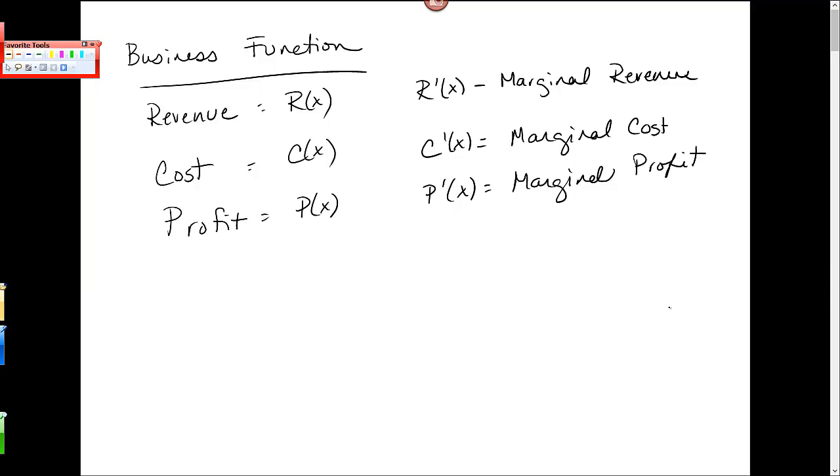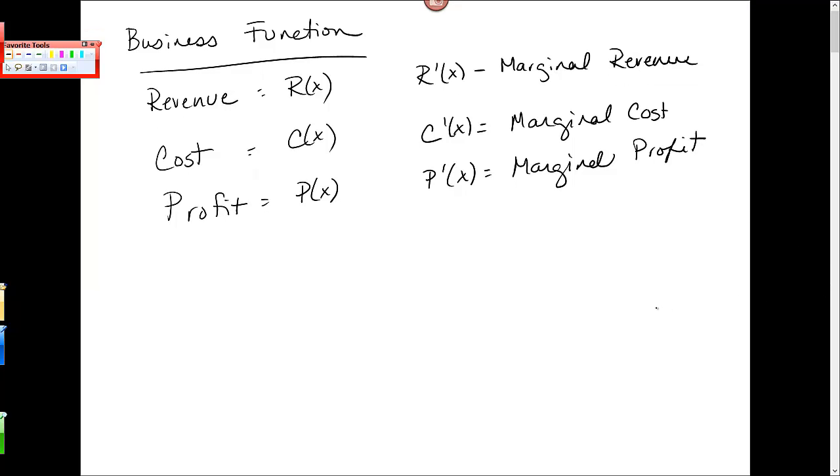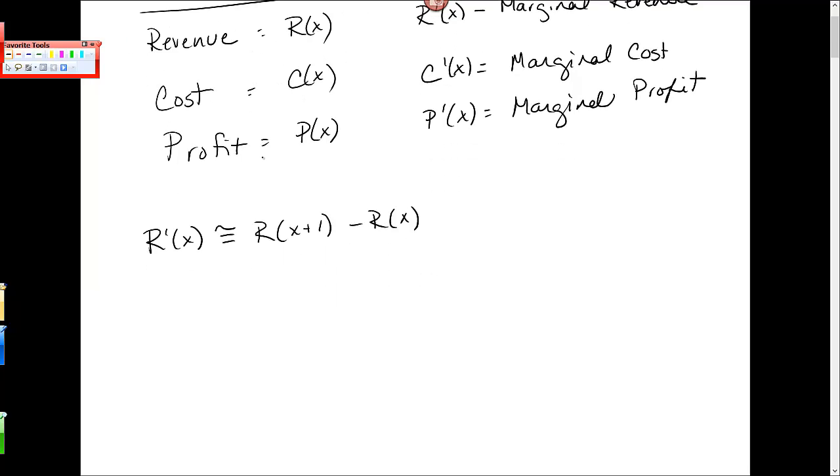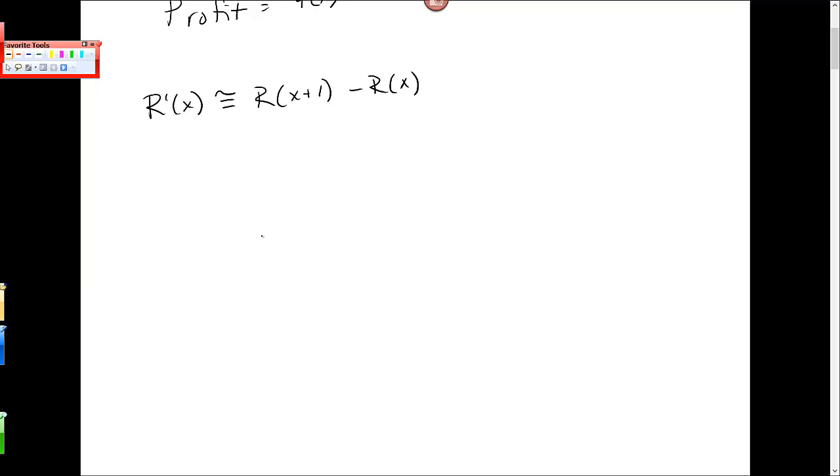Okay, and it turns out these all functions tell us that interpretation that we were talking about. That is, for example, R'(x) gives us an approximation of R(x+1) minus R(x), meaning it tells us approximately the cost of producing or of selling this (x+1)st item. So we'll find these, but we also want to talk about how to interpret these. So let's do a couple examples.